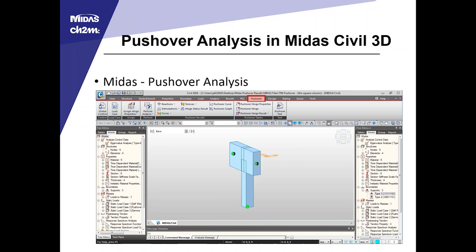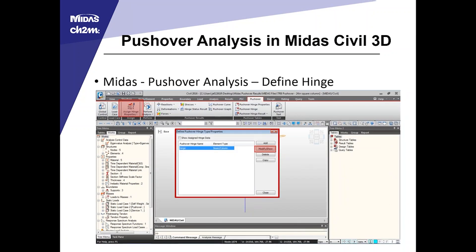When you hit the export button, it writes the hinge properties behind the scenes in MIDAS Civil 3D without a pop-up notification. If the section is linked to MIDAS Civil 3D, it implies the hinge has been created. If not linked, the properties are there and can be found when defining the hinge. The first step is to define the hinge under the Pushover Analysis main tab, the Assign Hinge Properties dropdown, and Define Hinge. If the GSD is linked and named, the hinge will be there and you can click Modify/Show to review the properties.